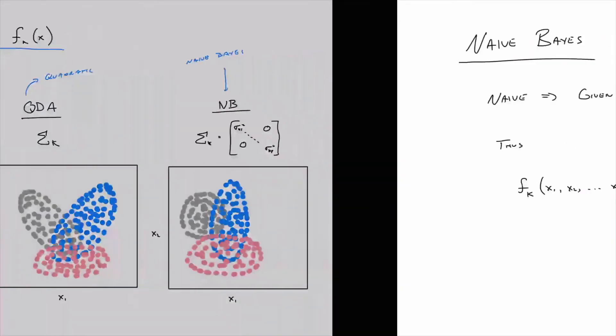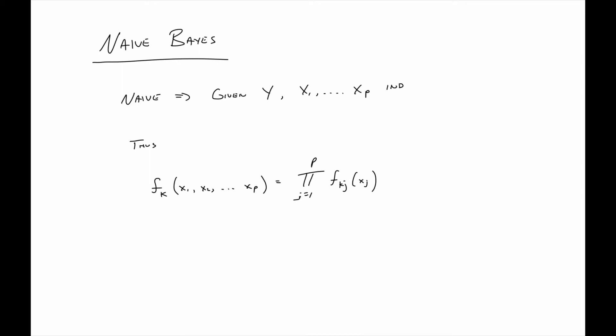So why is that? So what I just said on the previous slide is that naive Bayes says that, okay, given y the x1 through xp, that is the features are independent. So it turns out then, instead of a multivariate normal, what we have here is just, it breaks, that multivariate normal breaks down into the product of a bunch of univariate normals. So what this f sub k j is, it's the PDF of feature j, given y equals k, right?